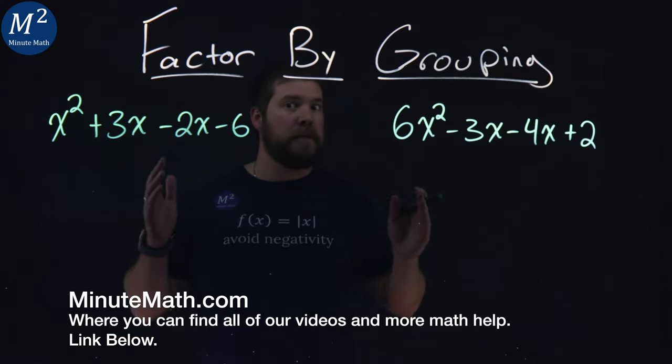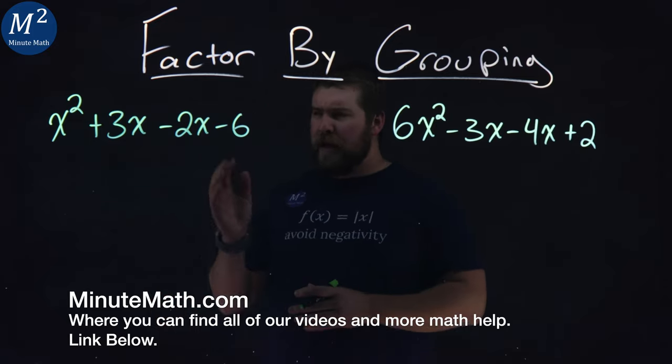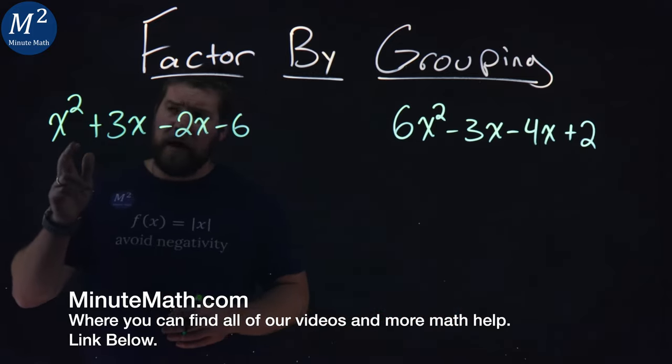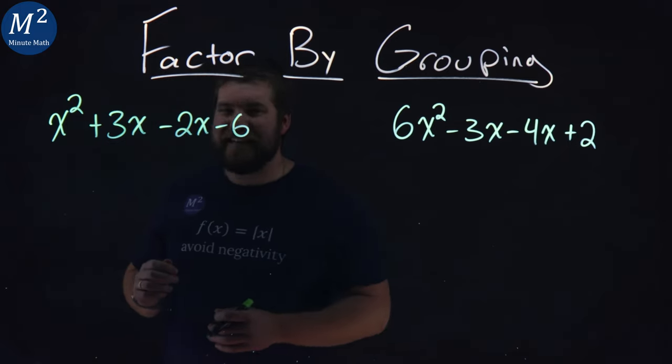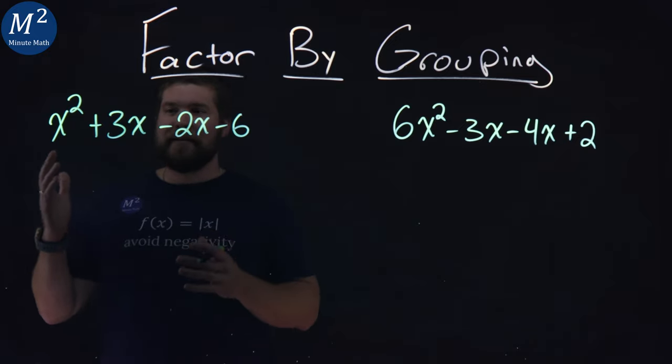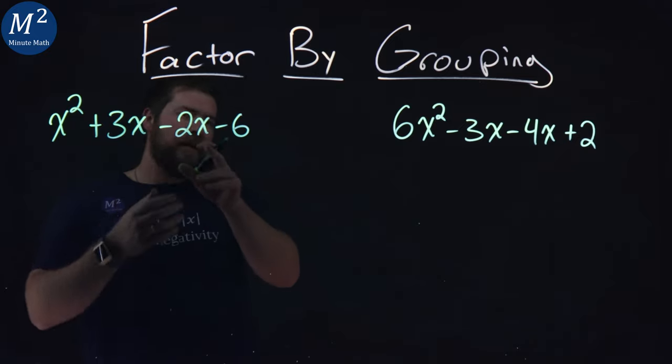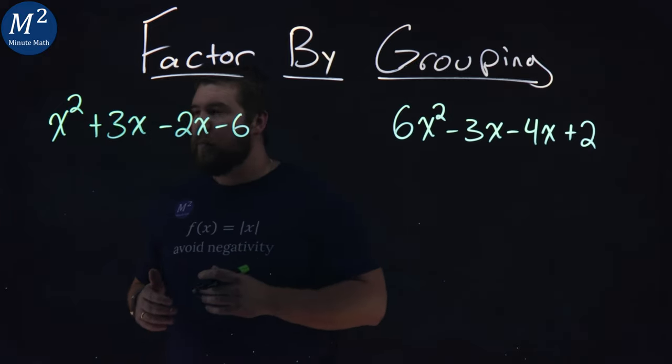We're given two problems here, and we're going to factor each one of these by grouping. So let's look at our first one right now. x squared plus 3x minus 2x minus 6 here. There's no greatest common factor in each part here. There's nothing that I can see that I can pull out from every single one that's in every single part. So let's group them.